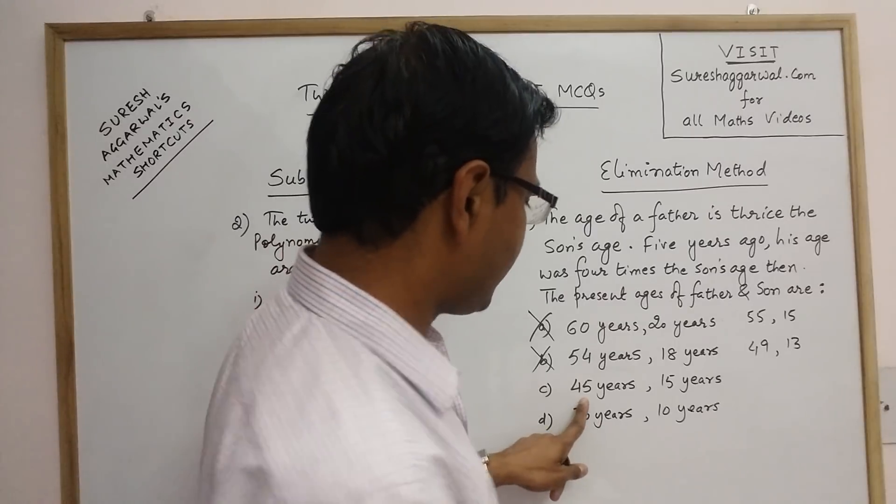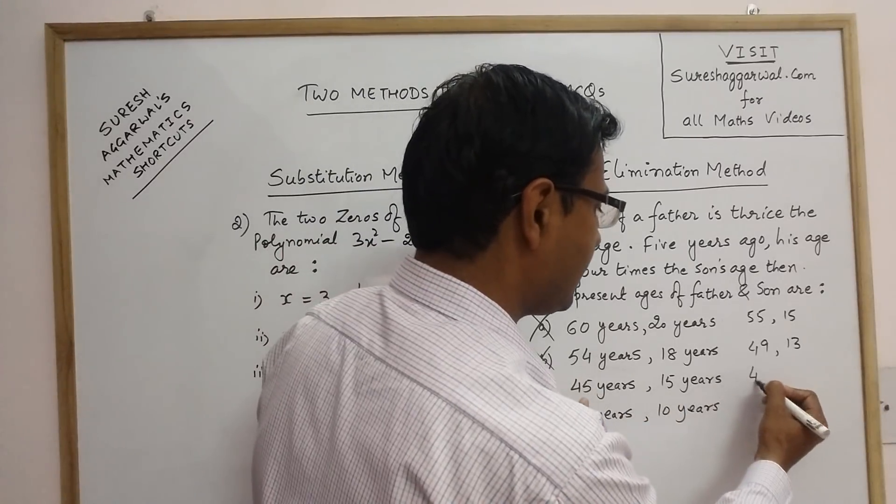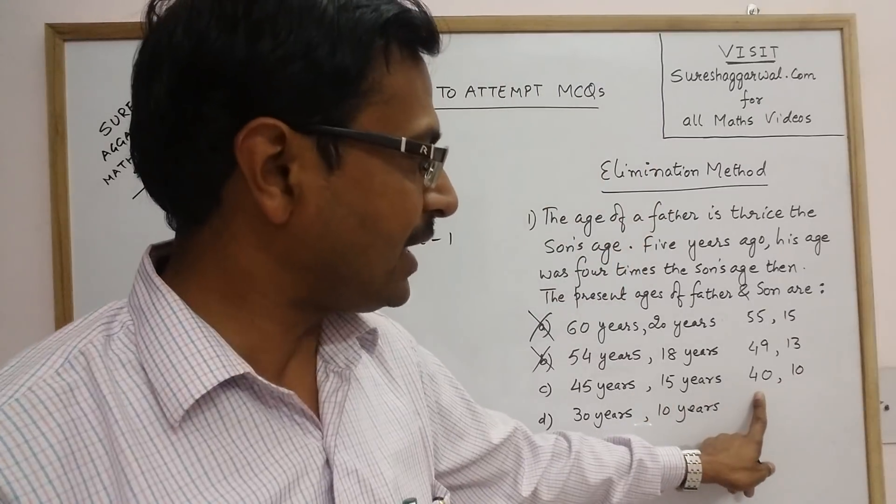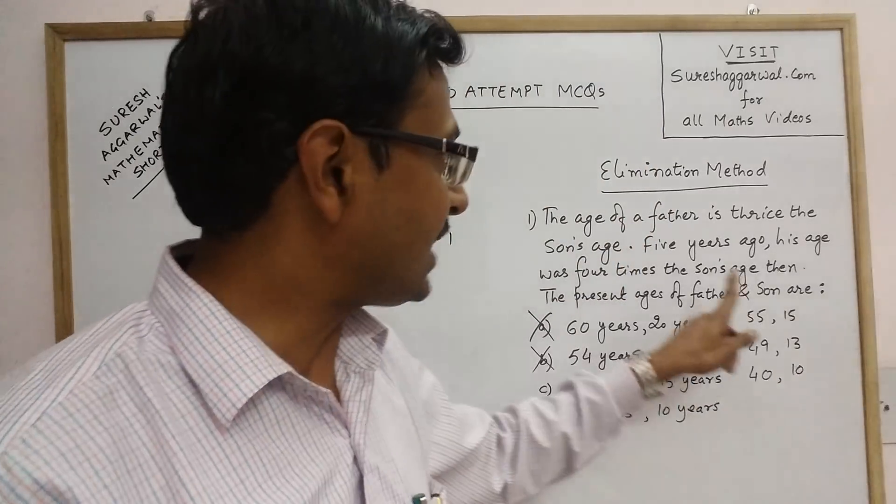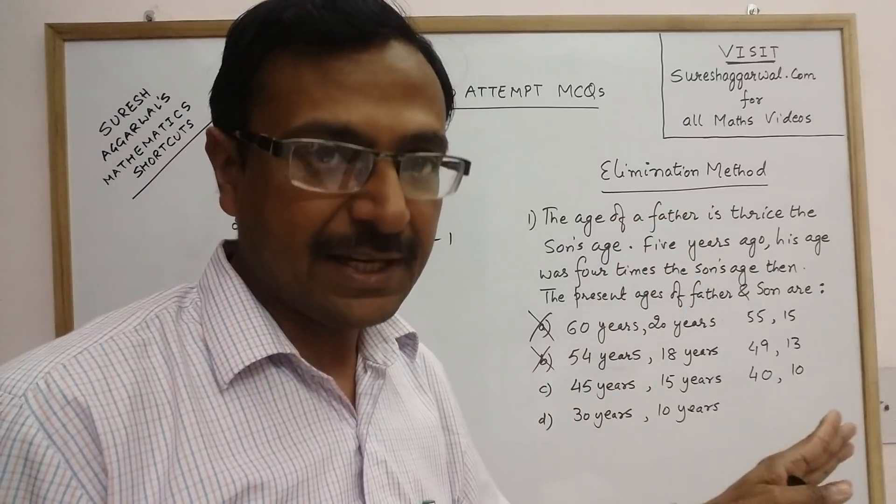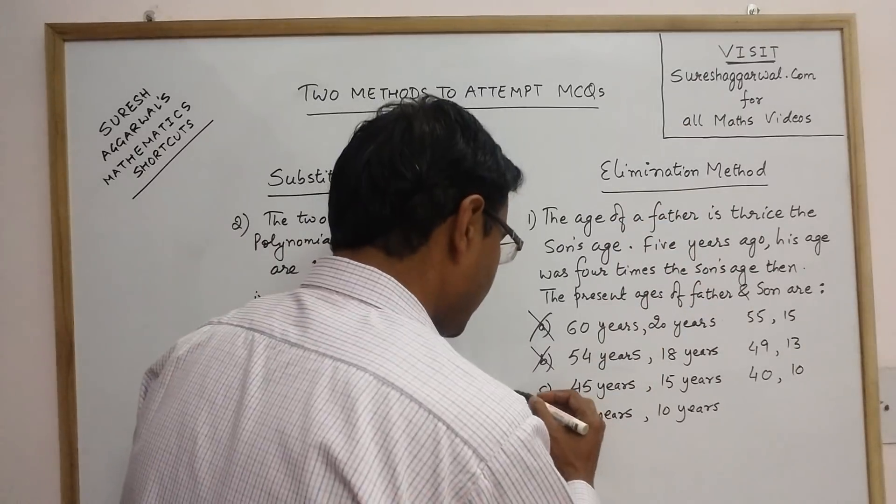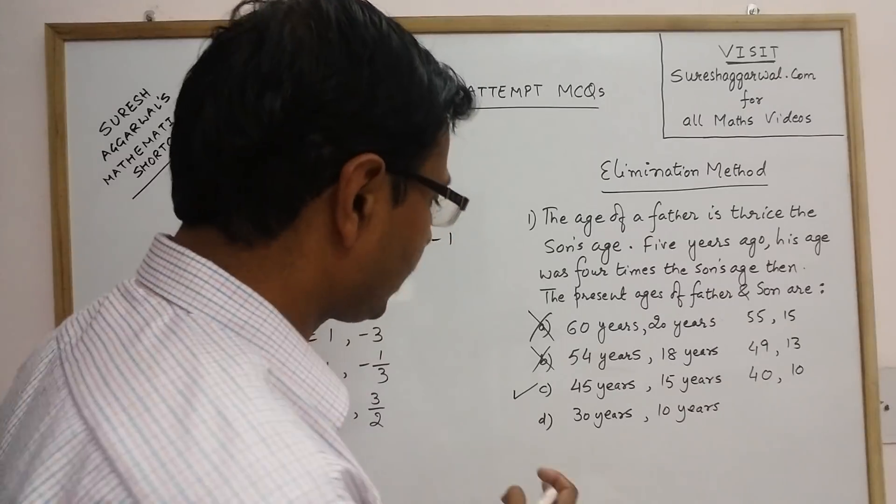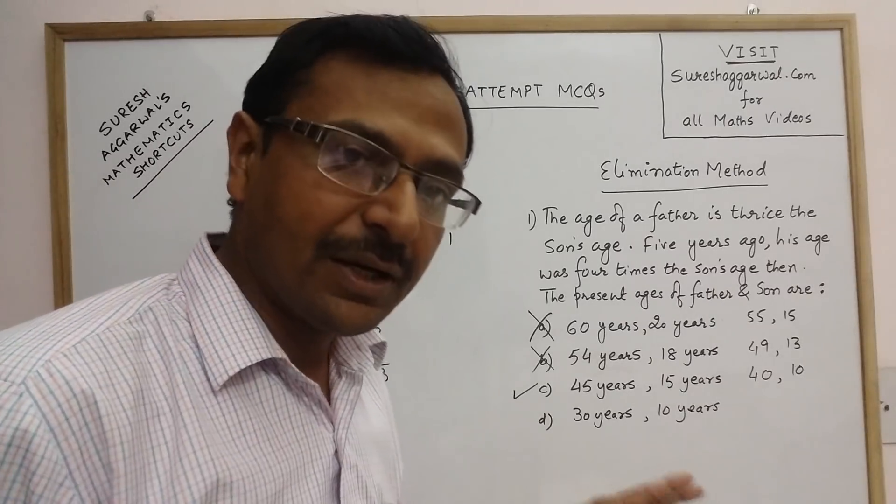Now see, five years back this is 40 and five years back this is 10. Now see, 40 is 4 times 10 which satisfies our second condition. So, your option number C is the answer and you do not need to take care of the D option.